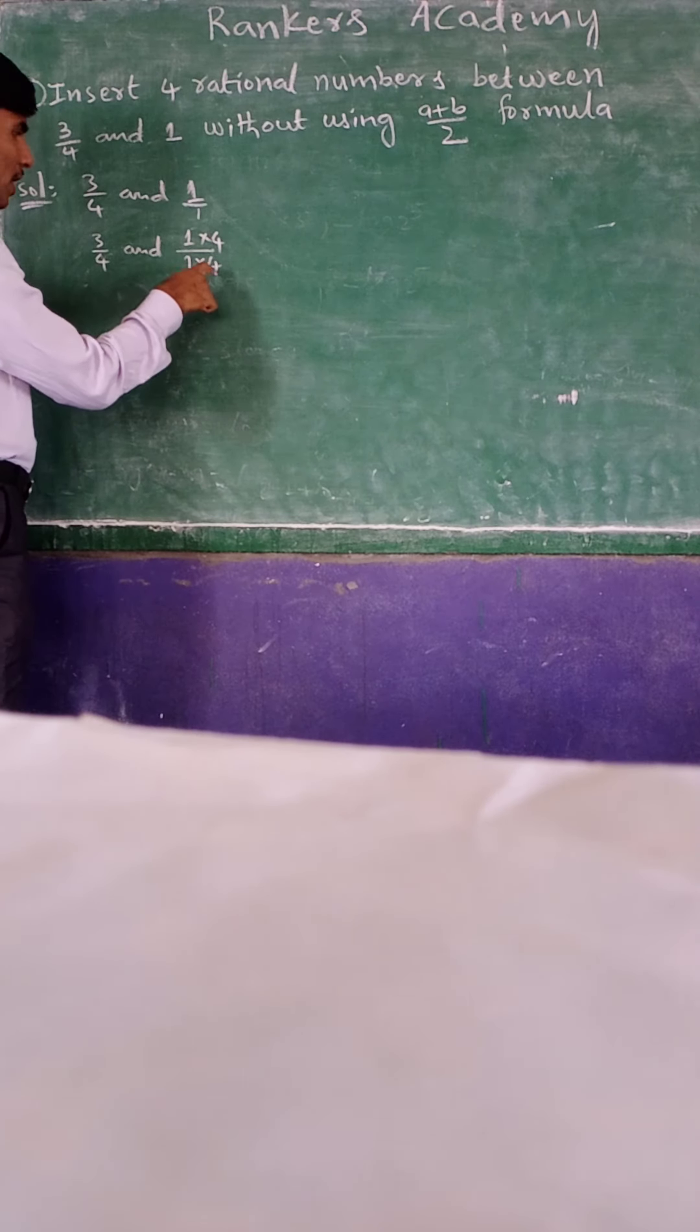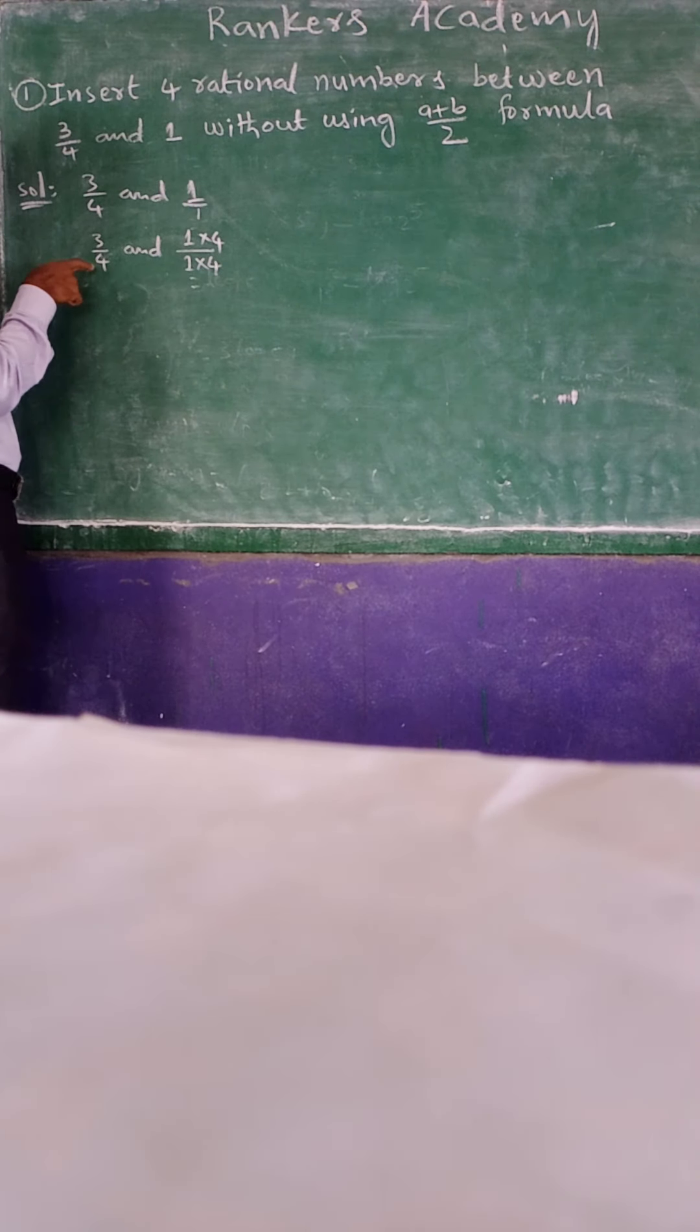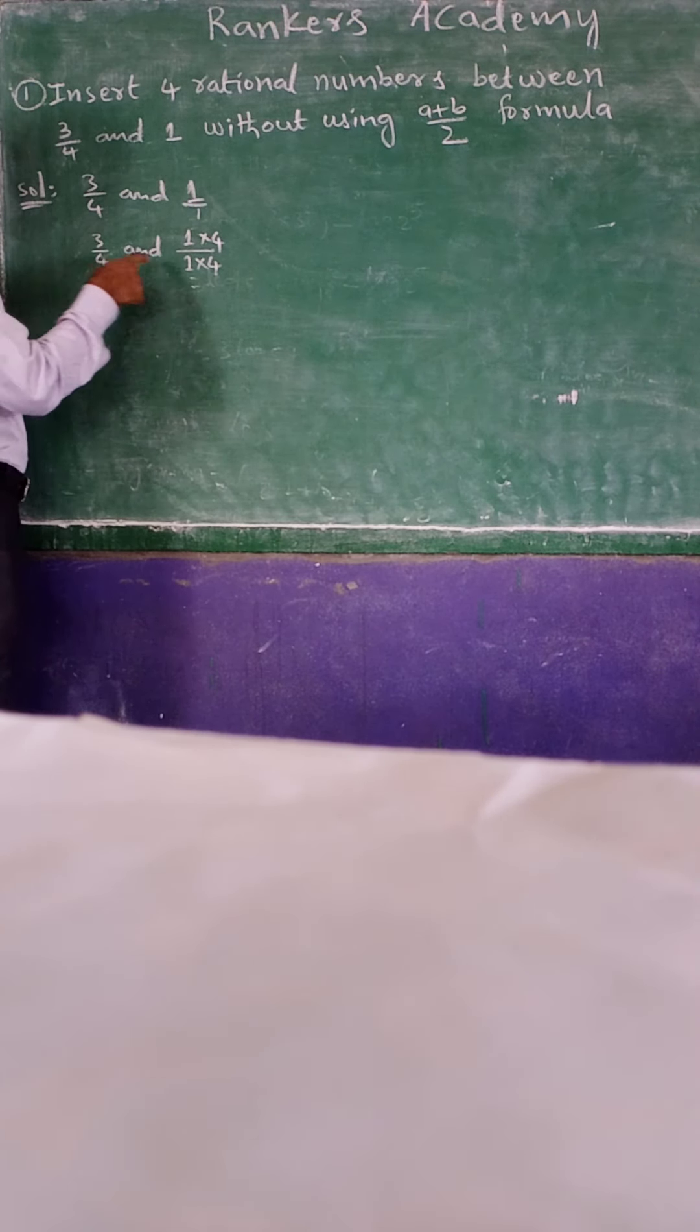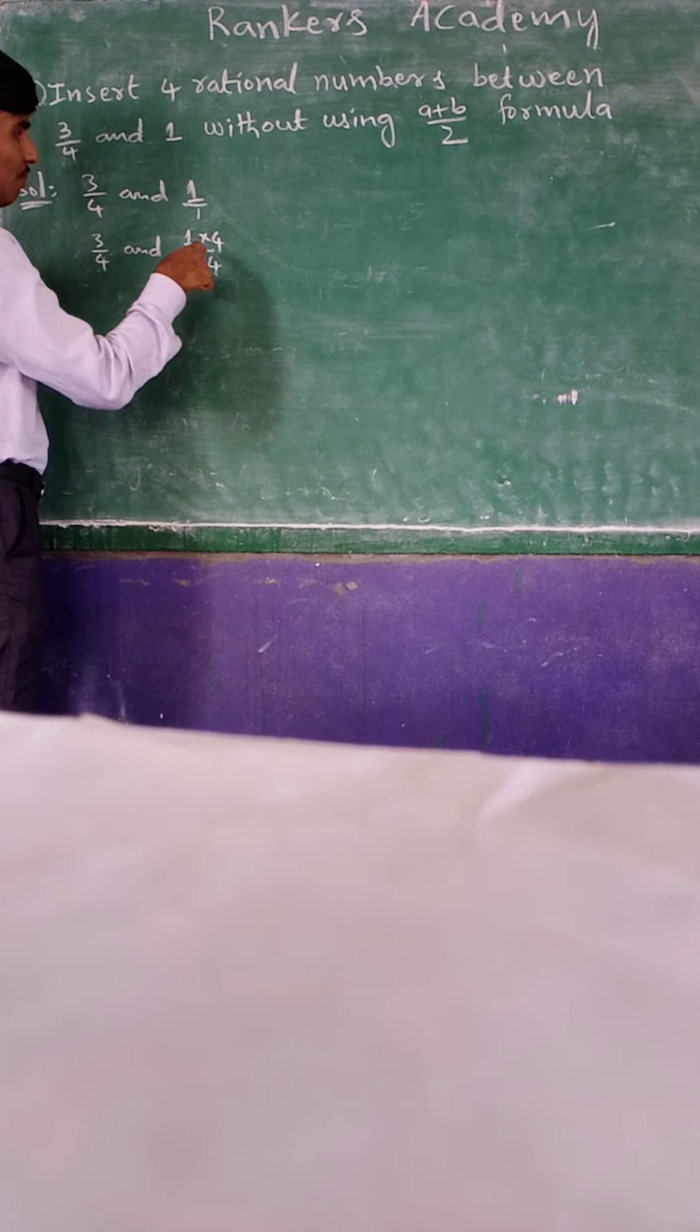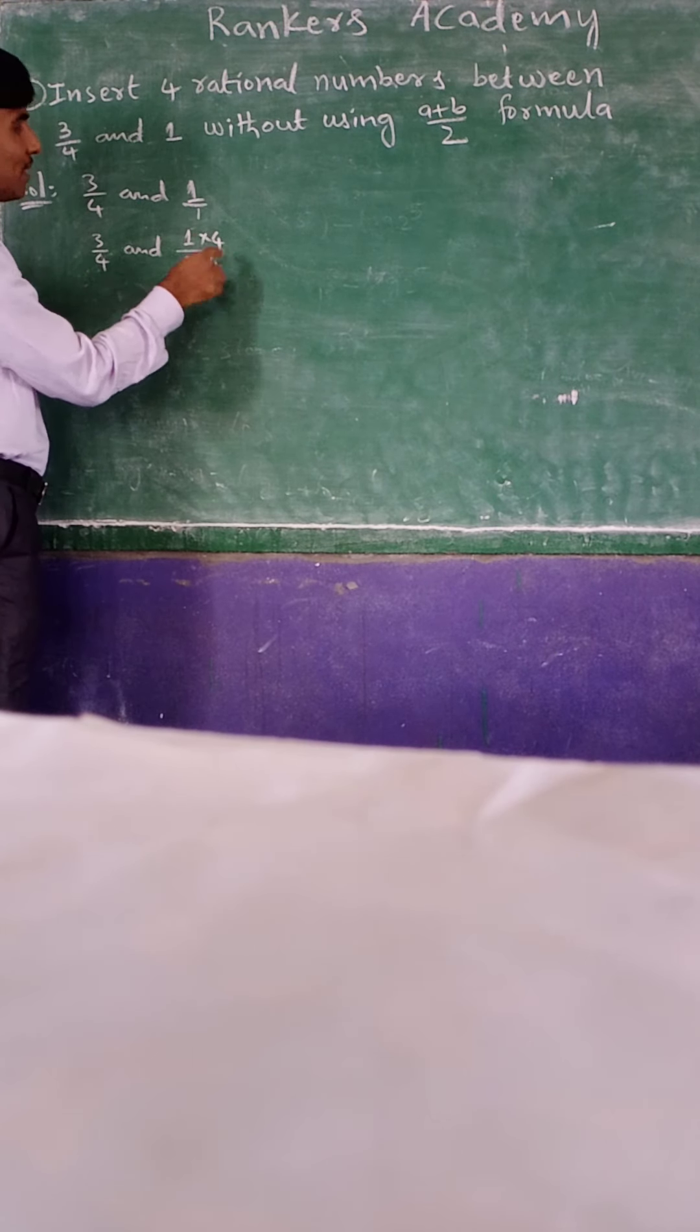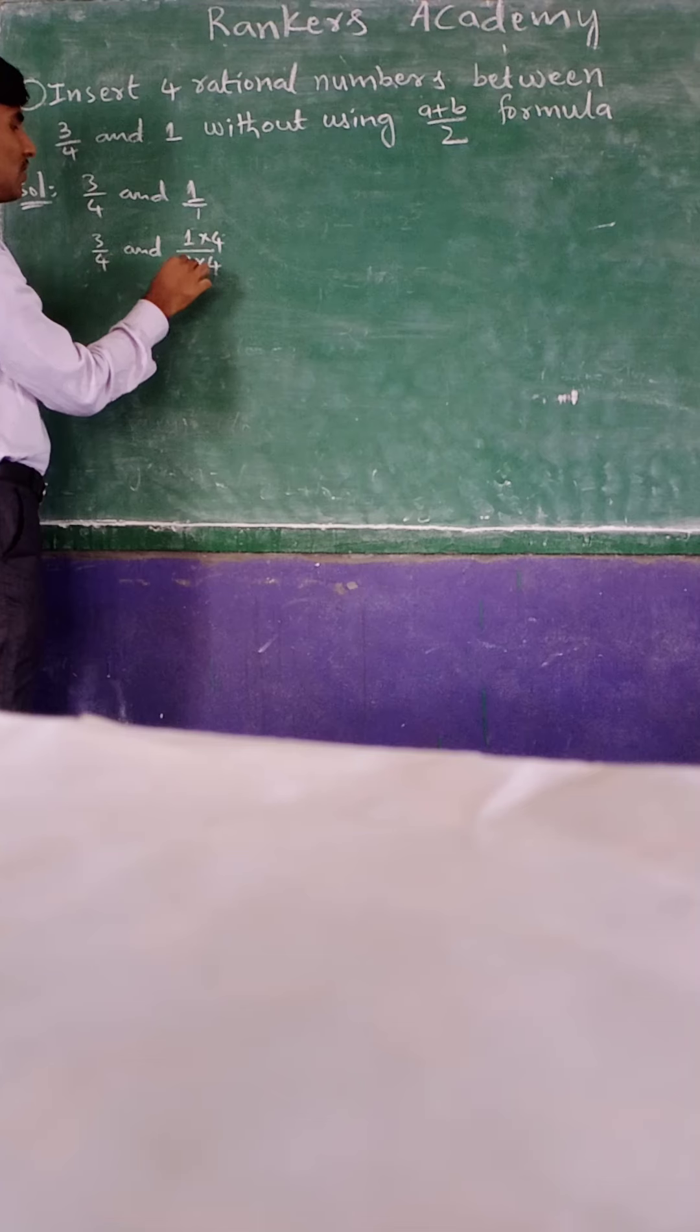Why we have to multiply. If you multiply you will get the same denominator. Suppose here, multiply and divide with 4. Again 4 will cancel. Again you will get the 1/1. Same one you will get.